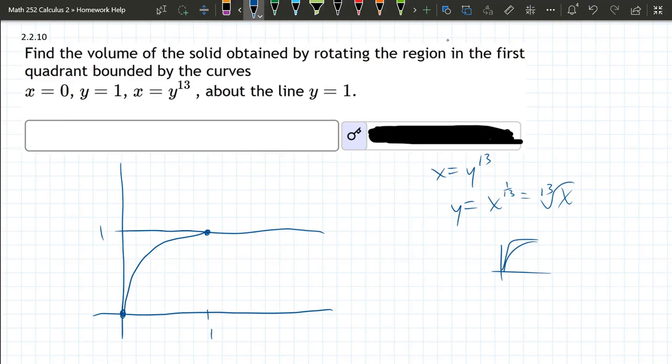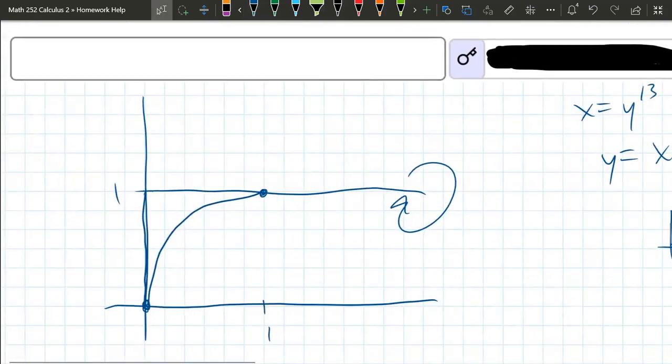We're rotating about the line Y equals 1. So we're rotating about there. We have the Y axis as another boundary. So it's this wedge right here. I'm drawing one cross section.